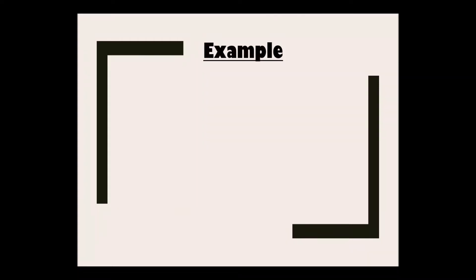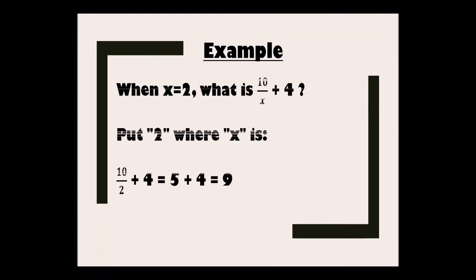Let's see some examples. When x equals 2, what is 10 upon x plus 4? Put 2 where x is, so 10 upon 2 plus 4. So 10 divided by 2 is 5, and 5 plus 4 is 9. So the answer is 9.